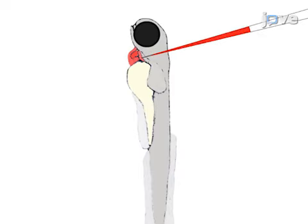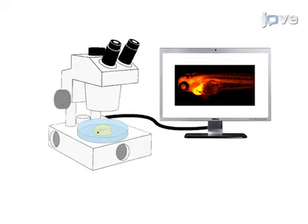Then the pericardial cavity is injected with a rhodamine dextran fluorescent dye and fluorescent images are acquired of the cardiac region using an epifluorescence dissecting microscope.